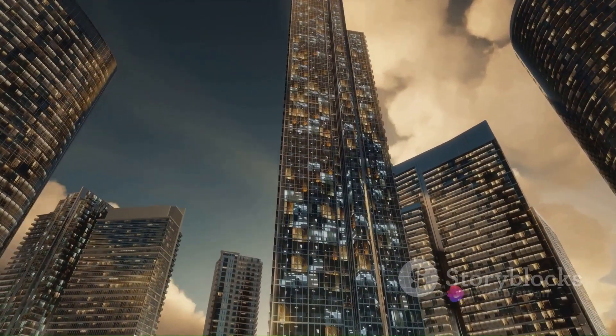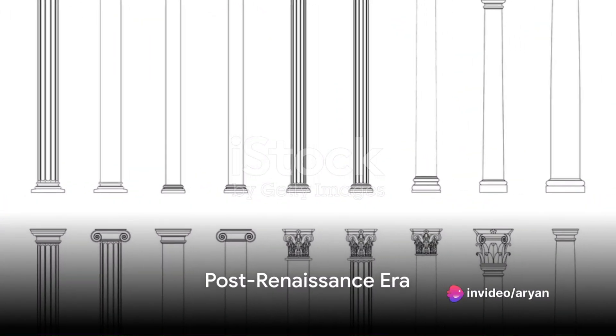Hello my fellow internet dwellers and welcome to another episode of Retrospects. This is our final episode on the evolution of architecture. In our previous two episodes, we discussed how architecture evolved during the ancient world and during the middle ages. In today's episode, we shall focus on how architecture evolved in the modern world, beginning around the time of the industrial revolution and going all the way up to today where we see architectural innovations all around us.